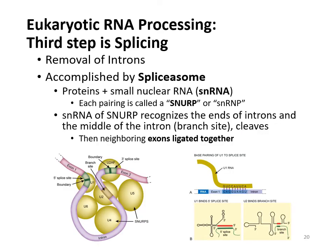The last processing event is splicing. Splicing occurs in eukaryotes but not prokaryotes because eukaryotes have introns and exons, whereas prokaryotes just have their exons — the coding areas. In RNA, exons are coding regions and introns are non-coding. What splicing basically is: a spliceosome — a special structure — will cut out any introns and then glue together the exons.